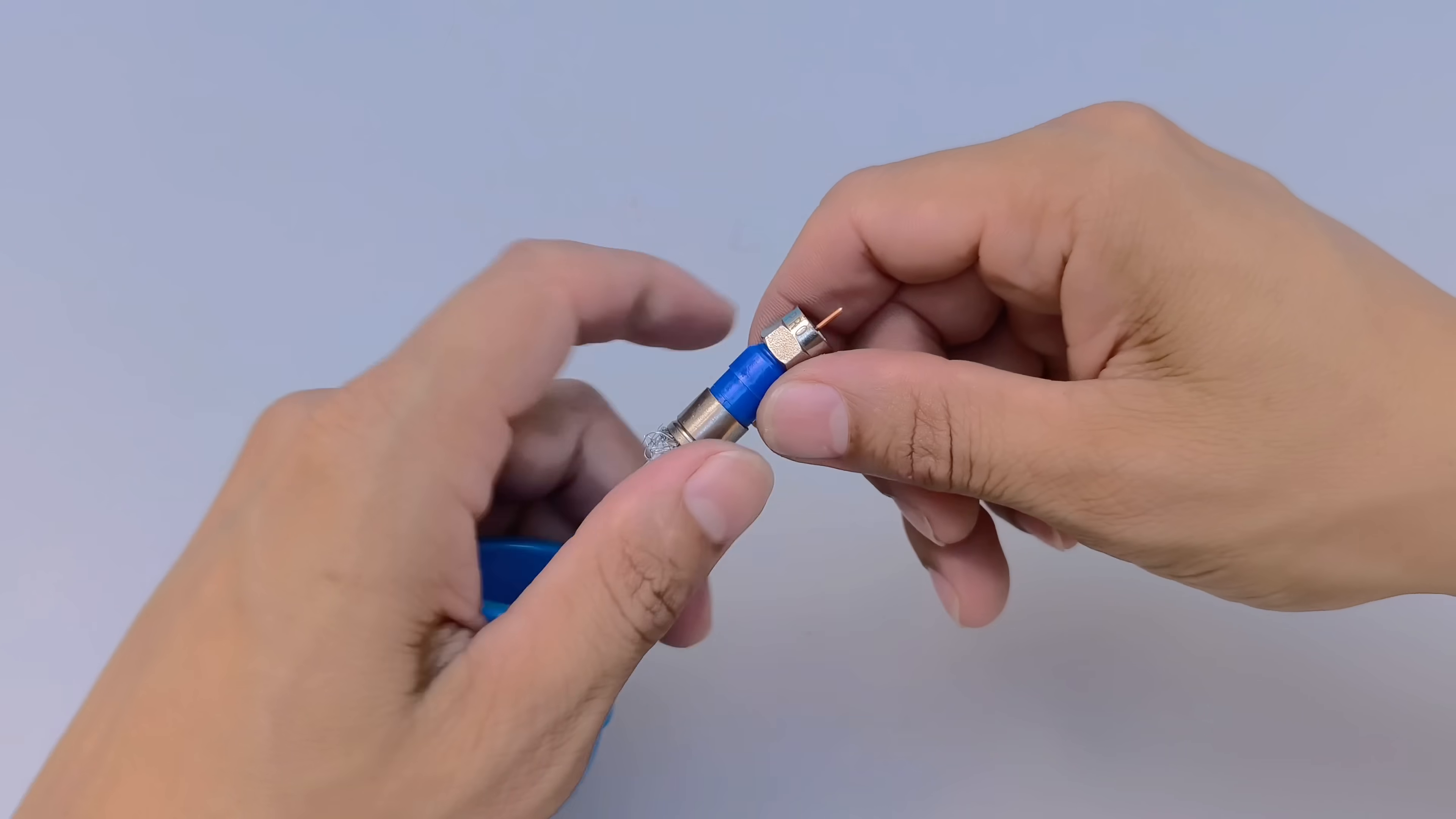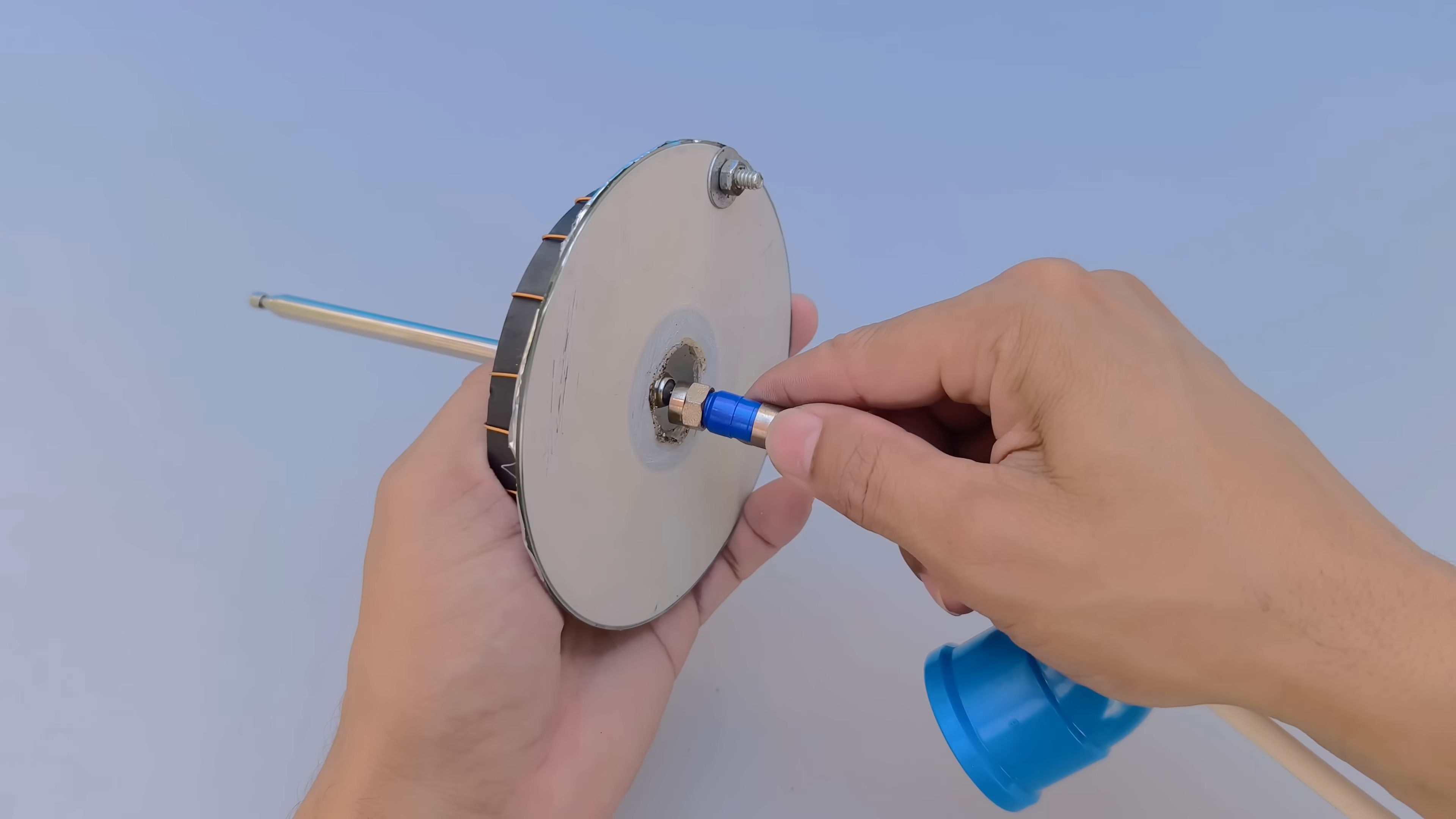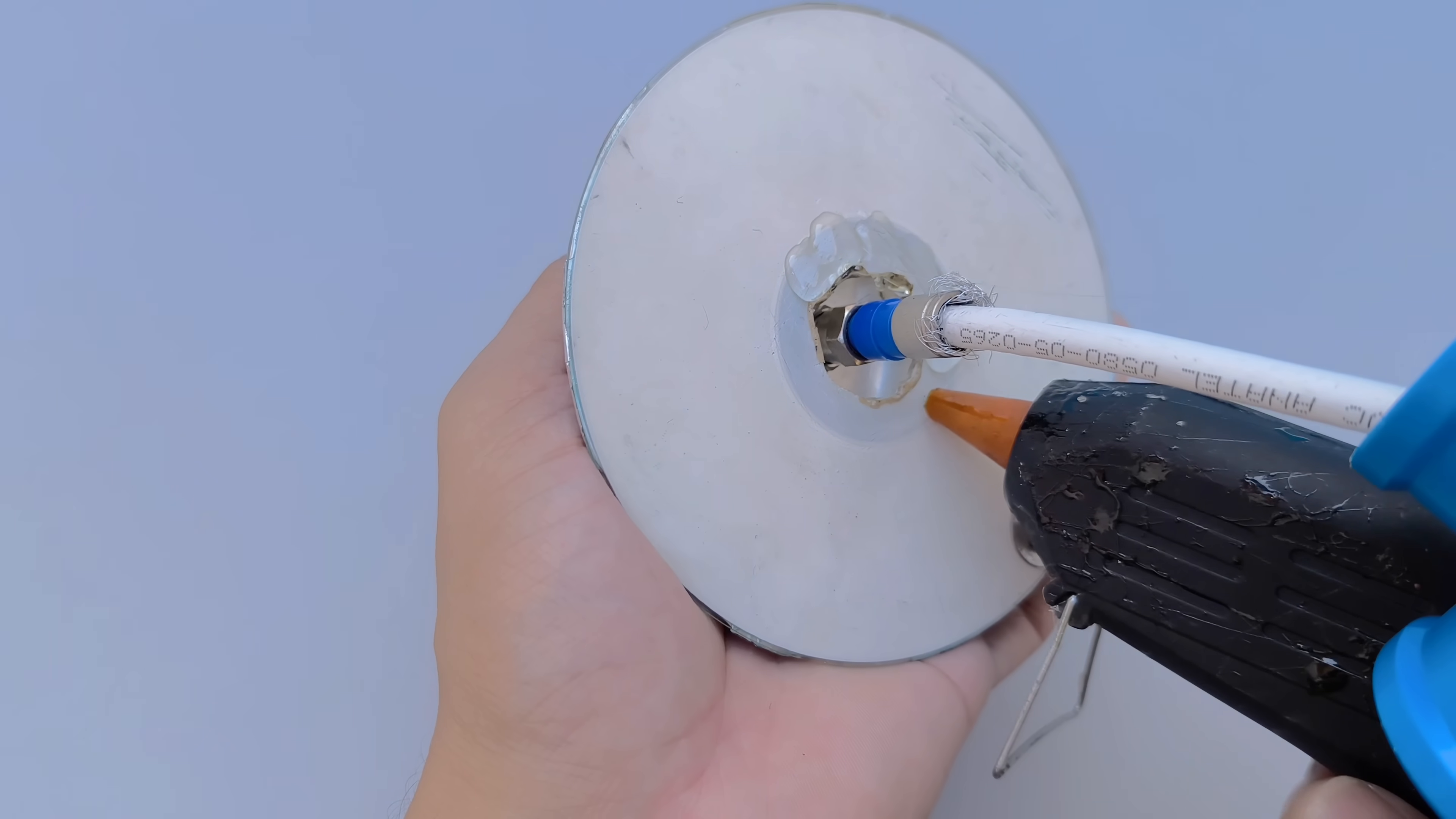If, after installation, there is any excess of the central copper wire of the coaxial, carefully remove this excess using cutting pliers, taking care not to leave the wire too long. After preparing the cable, connect it directly to the coaxial connector that was previously soldered to the base of the telescopic antenna, ensuring a firm, stable and functional connection.